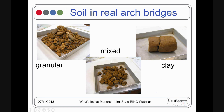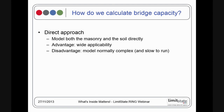How do we work out what the effects of a given backfill material are on bridge capacity? The most obvious approach is to model both the masonry and soil elements directly, which allows you to model every feature found in a particular bridge. The downside is that including soil in the model normally makes it quite complex and, even on a modern PC, quite slow to run — orders of magnitude increase in complexity.